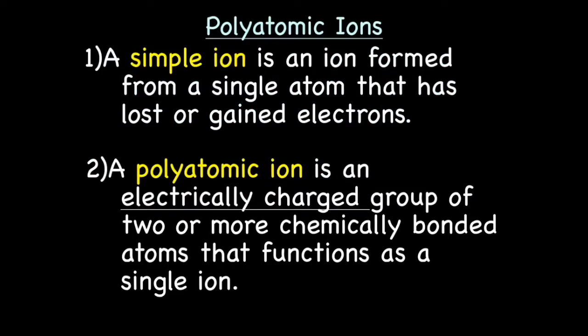To talk about polyatomic ions, we first need to refresh ourselves on simple ions. A simple ion is an ion formed from a single atom that has lost or gained an electron. It's what we've been talking about thus far, where, for example, sodium loses one electron to be isoelectronic with neon, or chlorine gains an electron.